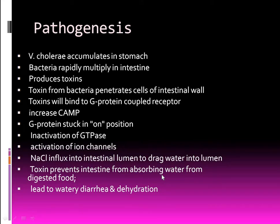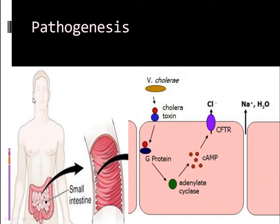Pathophysiology: Vibrio cholerae accumulates in the stomach, multiplies in the intestine, and produces a toxin. The toxin penetrates the intestinal wall, inactivates GTPase, and activates ion channels, thereby preventing absorption of water from digested food. The water from the body is released into the lumen of the intestine, leading to watery diarrhea and dehydration.